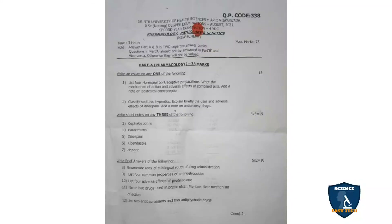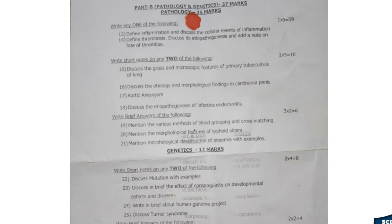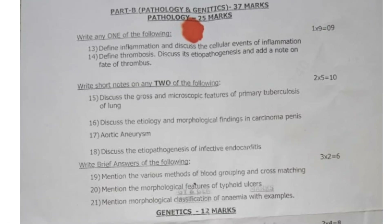Next we move on to Part B — Pathology and Genetics — for 37 marks. Of this, Pathology carries 25 marks and Genetics carries 12 marks. The essay question is for 9 marks; answer only 1 of 2. Question 13: Define inflammation and discuss the cellular events of inflammation. Question 14: Define thrombosis, discuss the etiopathogenesis, and add a note on the fate of thrombosis.